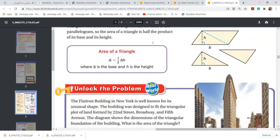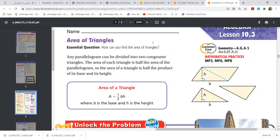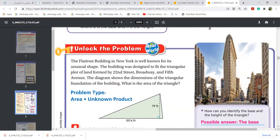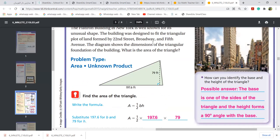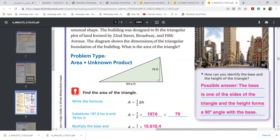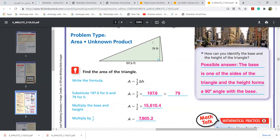Simple. First of all, what is the area of triangle? Half base into height. The base is given here 197.6 and the height is given as 79. I just put half base and height. What is base? 197.6. I write here. What is height? 79.